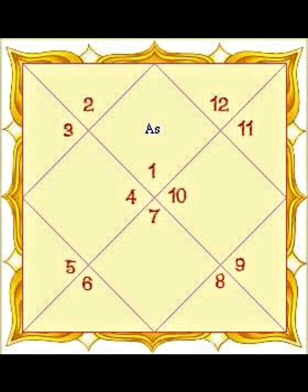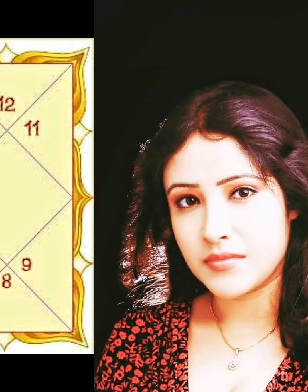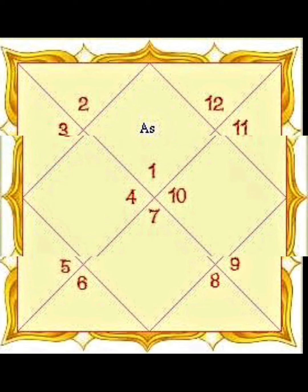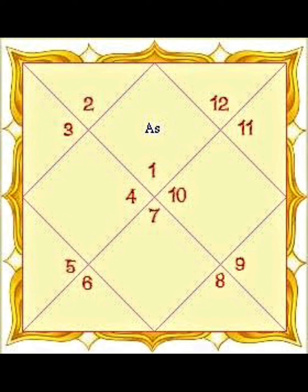The North direction is represented by zodiac signs 4, 8, and 12 — Cancer, Scorpio, and Pisces — the water signs. If you have planets in any two or all three of these signs, those planets are considered in a trinal relation or conjunction.